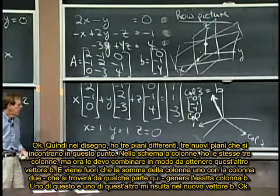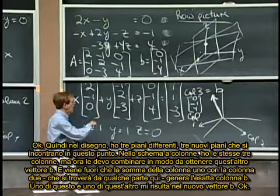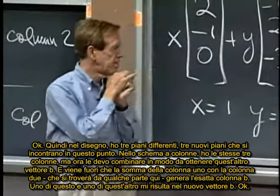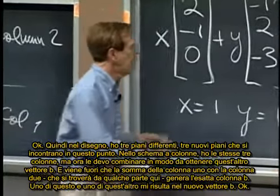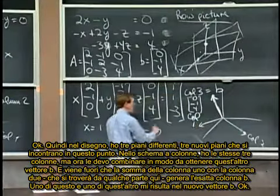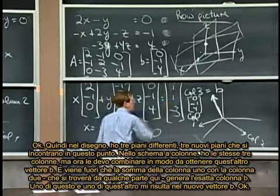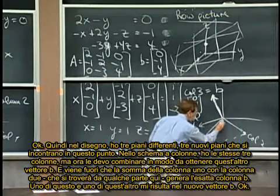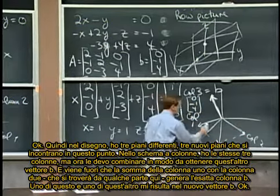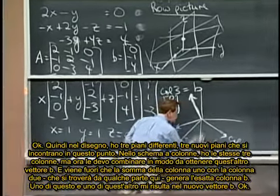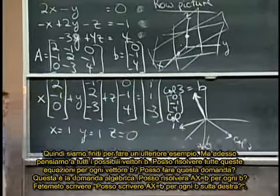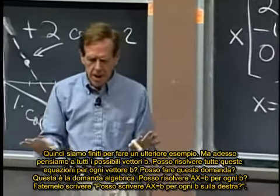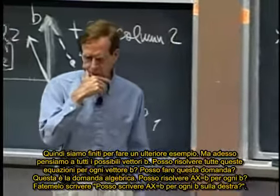Okay. So in the row picture I have three different planes, three new planes meeting now at this point. In the column picture I have the same three columns, but now I'm combining them to produce this guy, and it turned out that column one plus column two, which would be somewhere there, there is the right column. One of this and one of this would give me the new B. Okay, so that's like we squeezed in an extra example, but now think about all Bs, all right-hand sides.